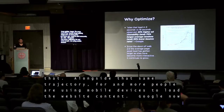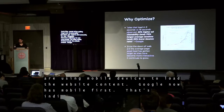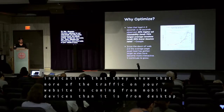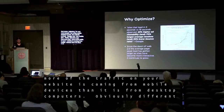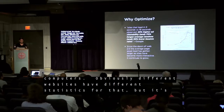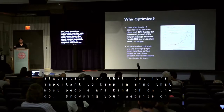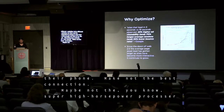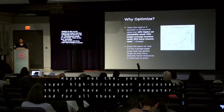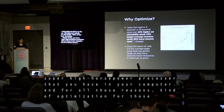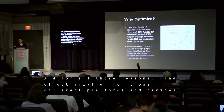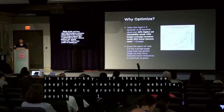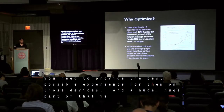Google now indexes mobile first, which is indicative of the fact that more of your traffic is coming from mobile devices than from desktop computers. Most people are on the go browsing your website on their phone — maybe not the best internet connection, maybe not the super high horsepower processor you have in your computer. For all those reasons, optimization for those different platforms and devices is super key.